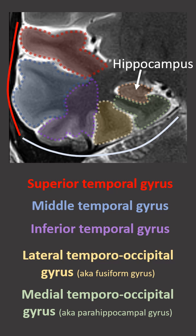On top of the parahippocampal gyrus we find the hippocampus, and a small knob on top of the surface of the superior temporal gyrus is Heschl's gyrus, or the primary auditory cortex.